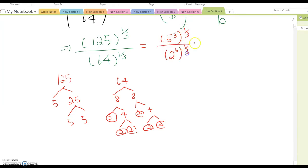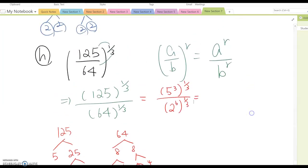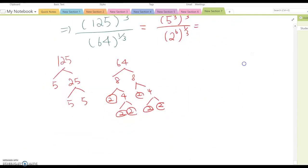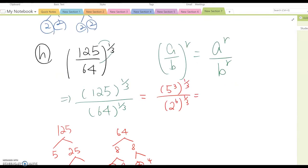And then you apply this property one more time. Then this is going to be 5 to the 3 times 1/3 over 2 to the 6 times 1/3, so 5 to the 3 over 3 over 2 to the 6 over 3. So it is 5 to the 1 power over 2 to the square power, so the answer becomes 5 over 4.